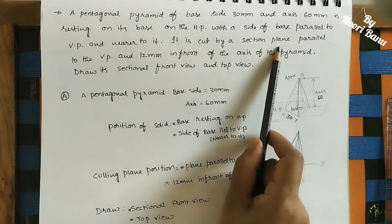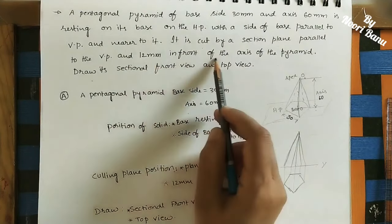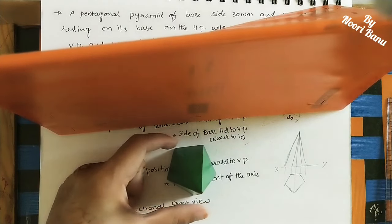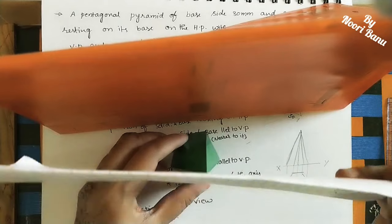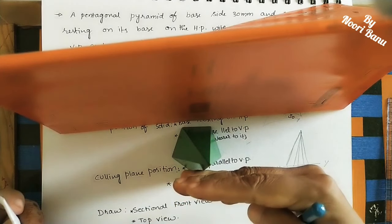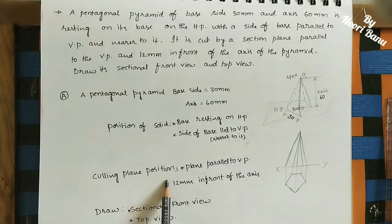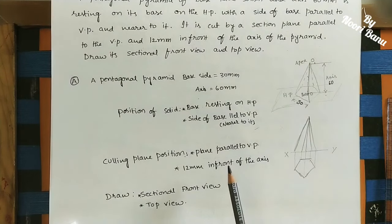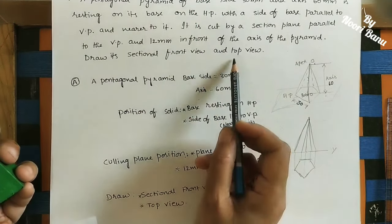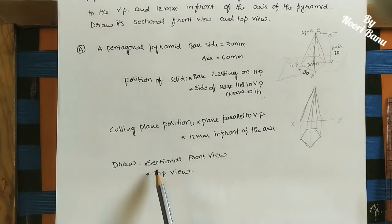The solid is cut by a section plane parallel to the VP, and 12 mm in front of the axis of the pyramid. We have to draw the sectional front view and the top view after cutting. First we do the solid projections without the cutting plane, then apply the cut.